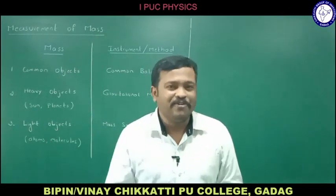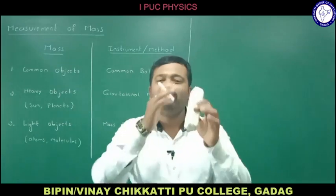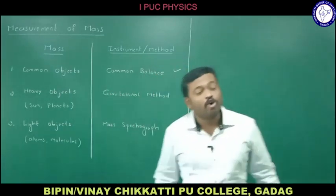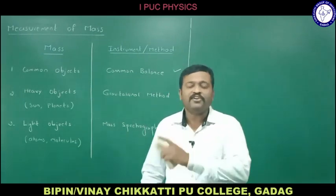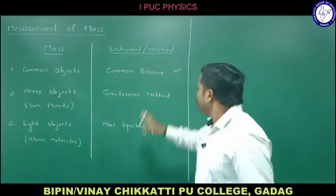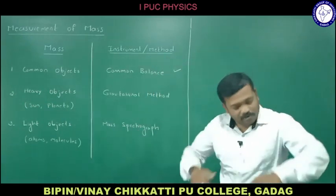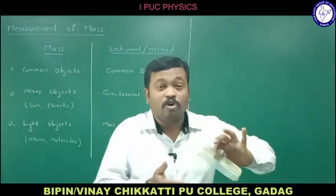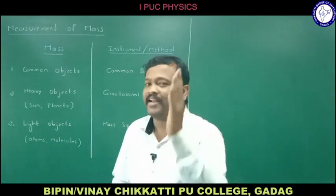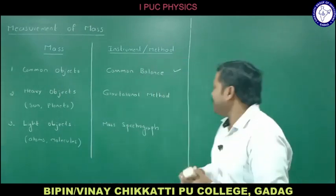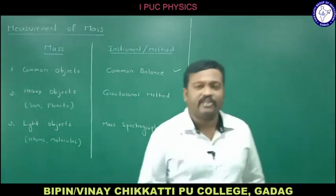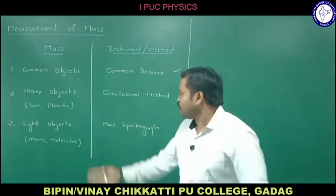The masses of common objects around us can be measured by an instrument called a common balance. But if I want to measure the mass of the Sun, Earth, or other planets, I cannot use a common balance. We need to measure it by an indirect method — and that indirect method is the gravitational method, using Newton's law of gravitation.